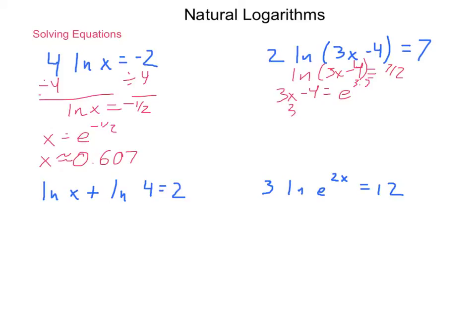Now, solve for X, we'll add 4, so 3X equals 4 plus E to the 3 and a half power. Divide by 3, so X equals 4 thirds plus E to the 3 halves, no, sorry, 3.5 thirds.